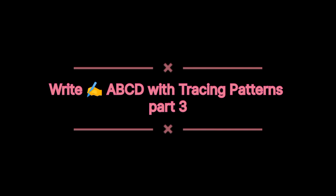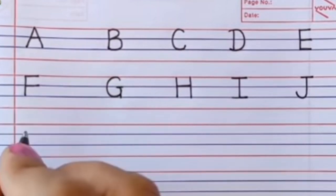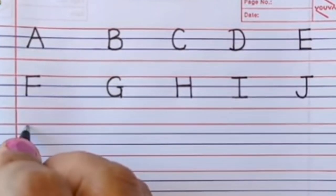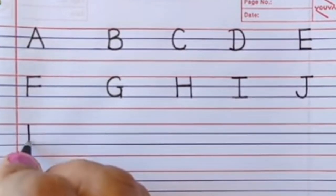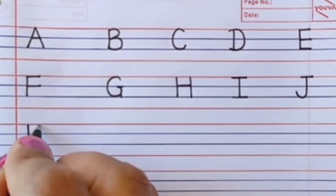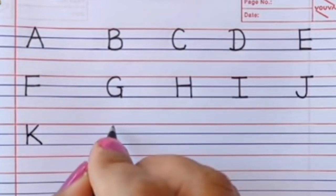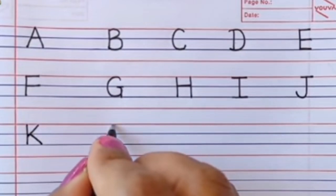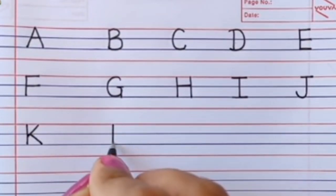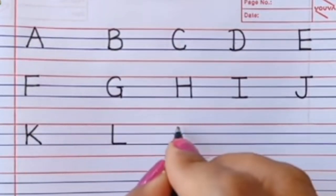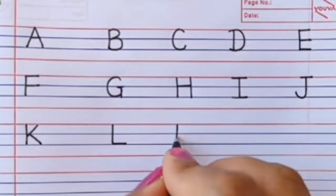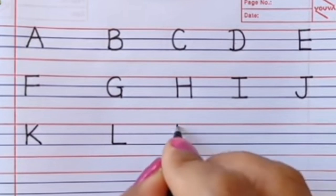How to teach kids the right alphabets, video part 3. Let's start with the letter K: one standing line with two slanting lines. Now letter L: one standing line with one slipping line. Letter M: two standing lines with two slanting lines.